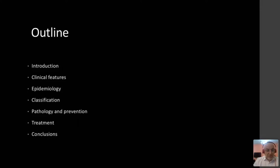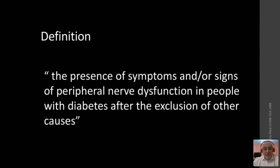Starting with definition: diabetic neuropathy is the existence of symptoms related to peripheral neurological symptoms related to the PNS, with or without signs, on the background of having diabetes mellitus, after exclusion of any other causes. Exclusion is the usual component in any neurological definition.